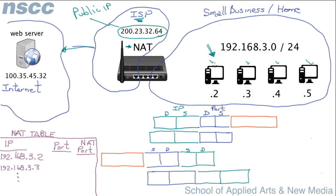So how is this shared? The client is going to ask for a web page — its data payload says 'give me a web page.' We've talked about how IP addressing works with ports. When the packet gets constructed, the source port is just some random port above 1,000 — we'll say it's 2,000. The destination port has to be for the web server, so since it's HTTP it has to be port 80. The source IP is 192.168.3.2, and the destination is our web server at 100.35.45.32.